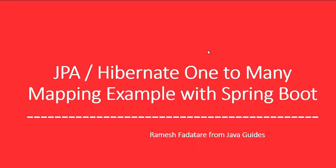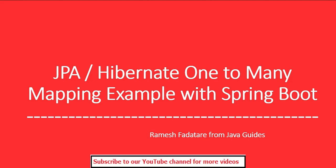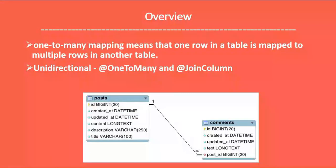Welcome to the JPA Hibernate one-to-many mapping example with Spring Boot. We'll create a Spring Boot project from scratch and define one-to-many mapping using JPA and Hibernate. Hibernate is one of the popular JPA implementations and a popular ORM framework for mapping domain models to relational database tables. One-to-many mapping means one row in a table is mapped to multiple rows in another table.